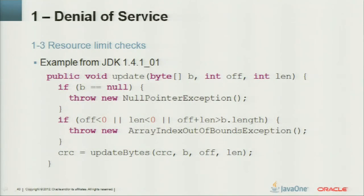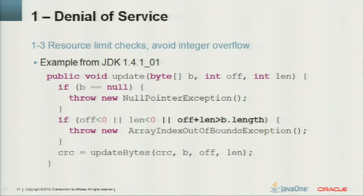Resource limit checks — what can go wrong? Looking at this code example: there is an integer overflow. The overflow is in the check where 'offset plus length' can exceed the maximum integer value and wrap to a negative number, thereby circumventing the protection of the native method — the comparison will fail. The misconception is believing the value space of integers is unbounded, when of course it is bounded.